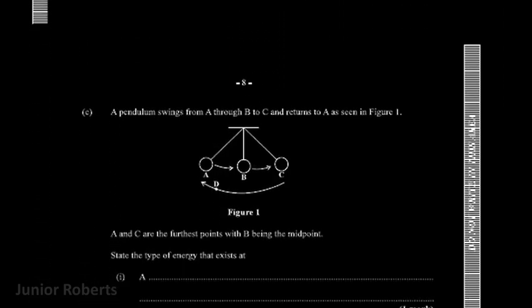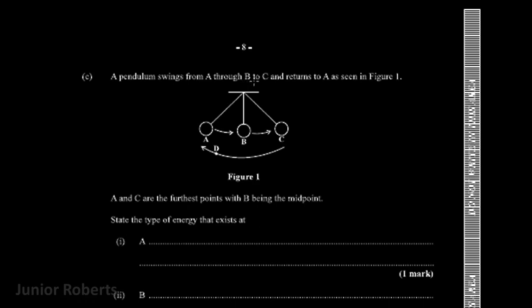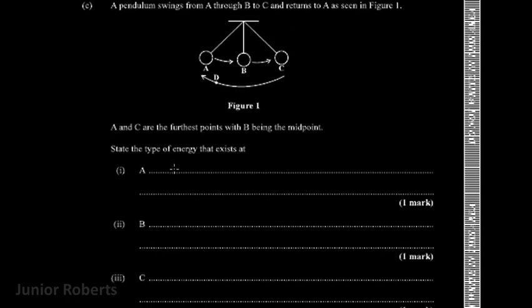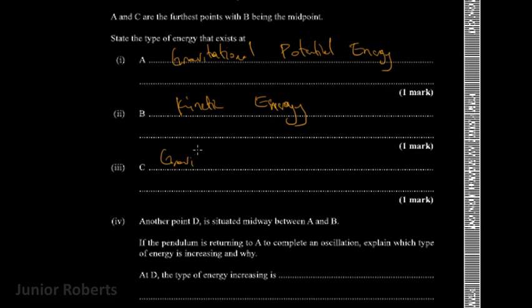The question says a pendulum swings from A to B to C and returns to A as seen in Figure 1. A and C are the furthest points and B is the midpoint. State the type of energy that exists at different positions. At A, we will have gravitational potential energy. At B, we will have kinetic energy. And at C, we will have also gravitational potential energy.